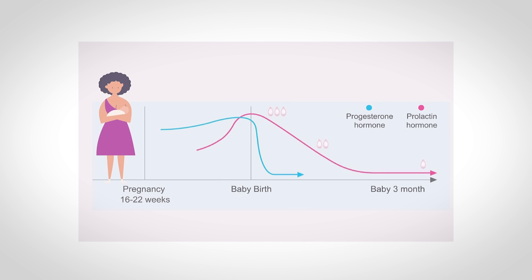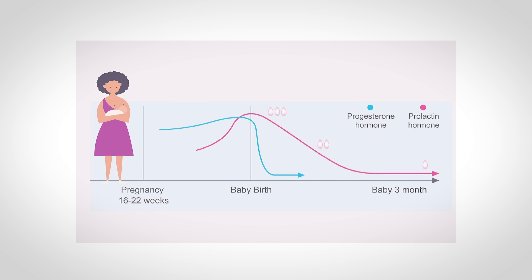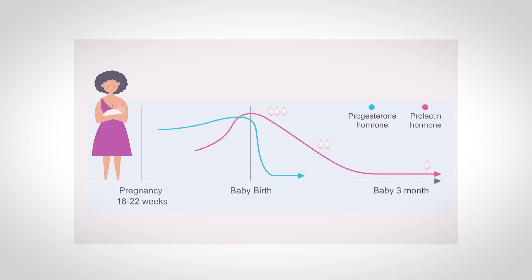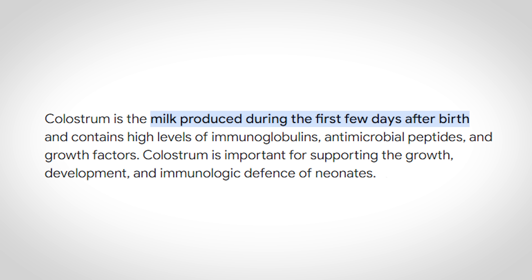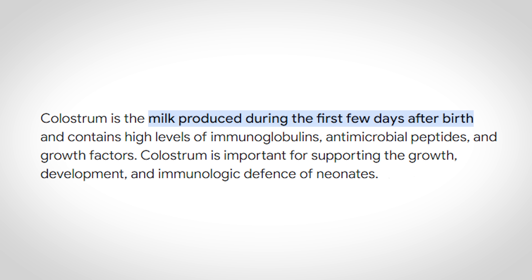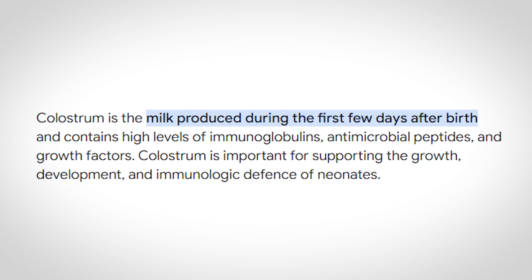Once the baby is born, the placenta is also birthed and is no longer inside mom secreting the extra estrogen and progesterone that was inhibiting the release of milk. So now, all that built-up prolactin can take effect, allowing the baby to have their own personal set of lactation stations. A few days prior to and a few days after birth, the fluid secreted from the breast is called colostrum, which contains similar concentrations of proteins and lactose as milk but almost no fat.